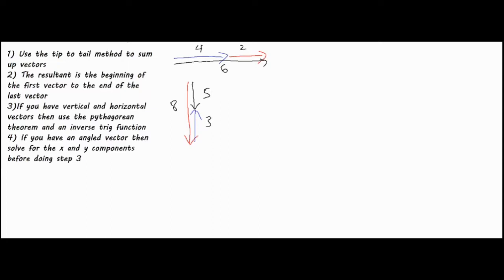When it gets a little trickier, we're going to use step number three if you have a horizontal and a vertical vector. Let's say this one has a magnitude of three and this one has a magnitude of four. We're going to use two different things: the Pythagorean theorem and an inverse trig function, just as step number three mentions.